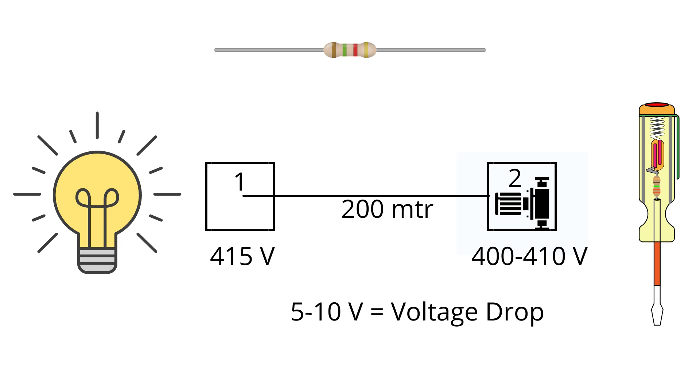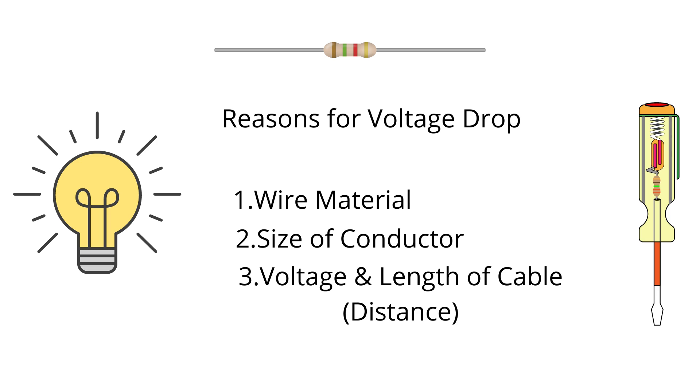Now there are several reasons as to why voltage drop occurs in a circuit, and these are: the wire material, the size of the conductor, and the voltage and length of the cable, which is the distance.